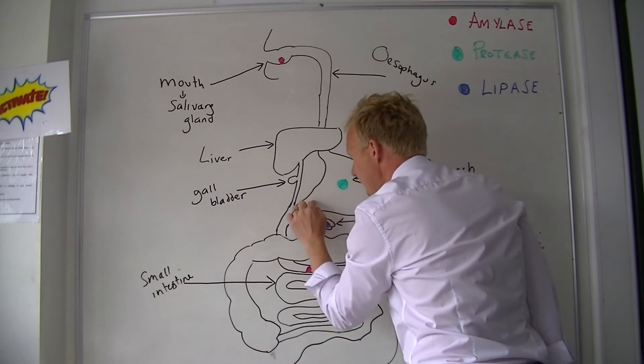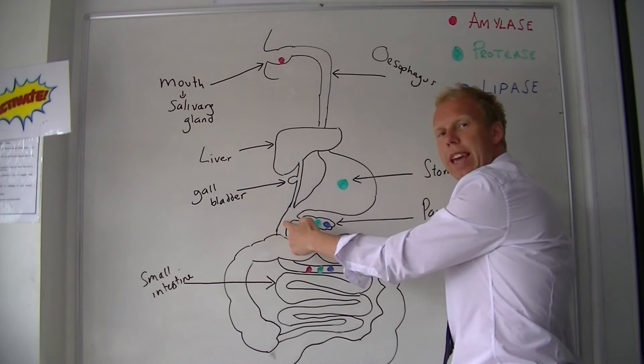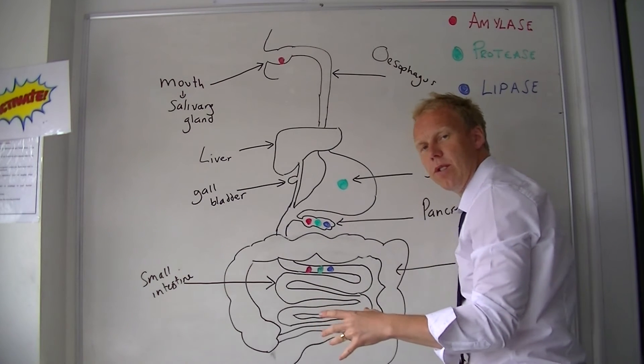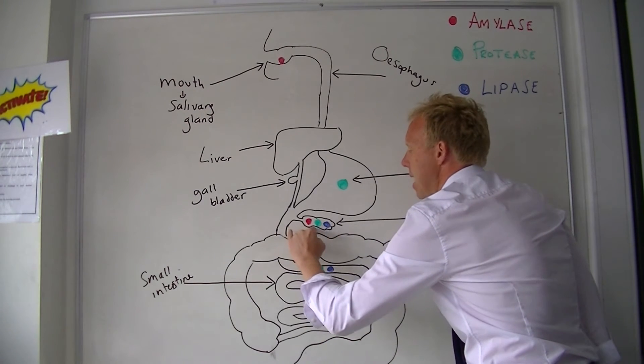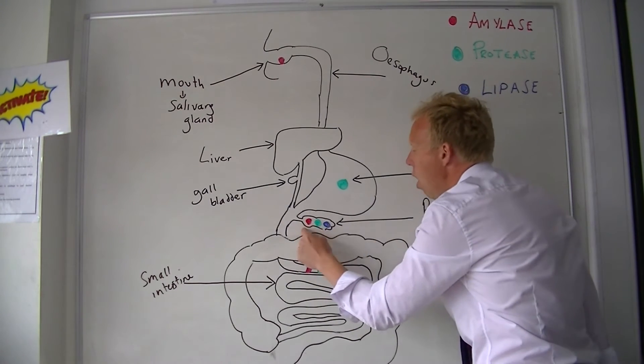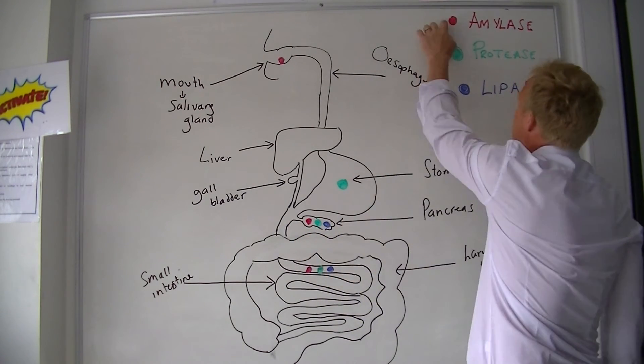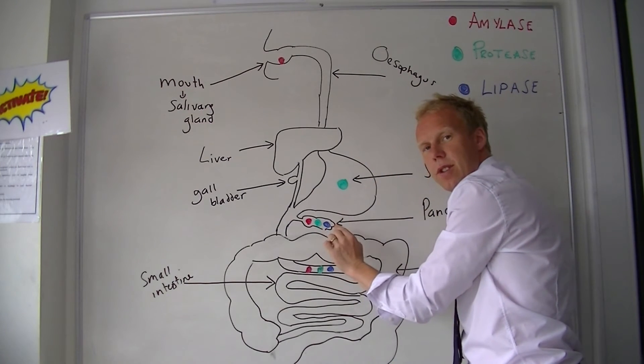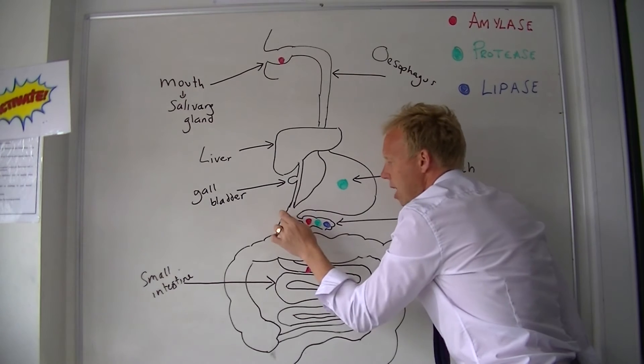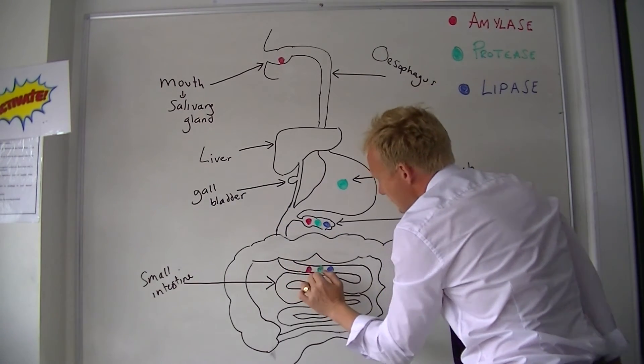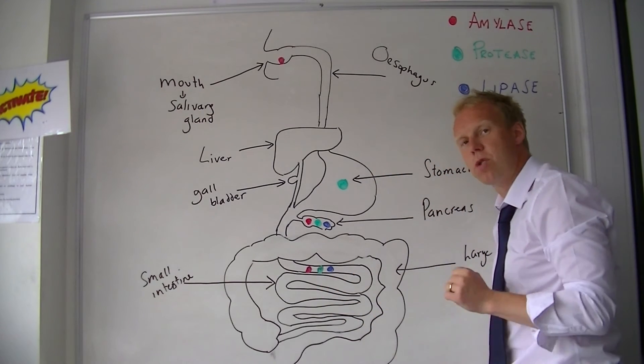Then we come to here and we get the addition of two different sets of chemicals. There are three enzymes made by the pancreas. I hope you can see that all three main types of enzymes are made in the pancreas. So our lipid digestion begins about here, and the same three enzymes are made in the small intestine.